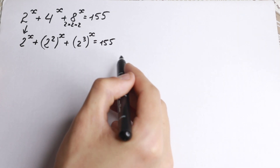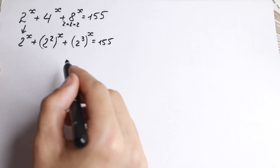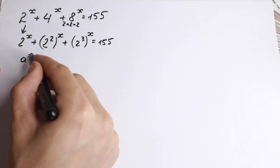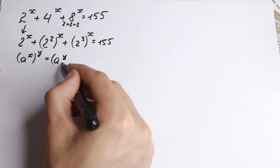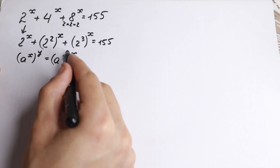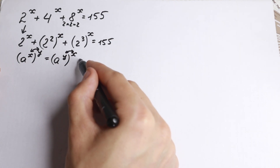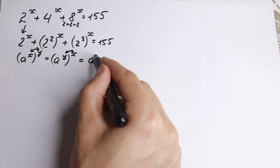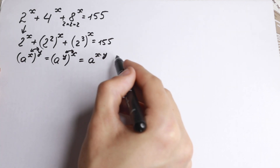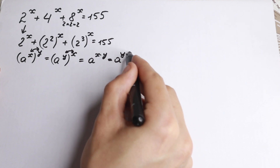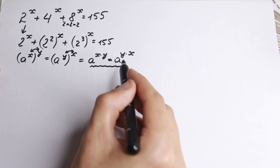Now we need a really good rule — the rule of interchange. If we have a to the power x, and we raise that to the power y, we can swap the exponents and write it as a to the power y, raised to the power x. This works because both expressions equal a to the power x times y, and since multiplication is commutative, x times y equals y times x.